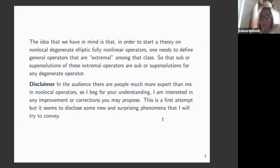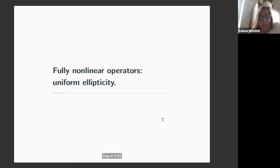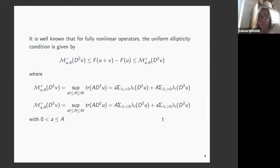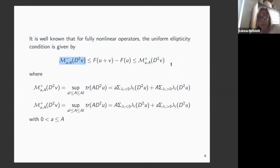A little disclaimer: I'm not an expert in nonlocal operators. This is really a first attempt to understand how things go in this setting of degenerate and nonlocal operators, so please anyone who has feedback is very welcome. How does one define a fully nonlinear uniformly elliptic operator? The idea is that when you look at the difference between F(u+v) and F(u), you bound it above and below by the Pucci operators M^+ and M^-, which are defined as the sup and inf of the trace of A D²u, respectively.